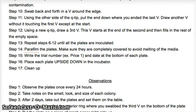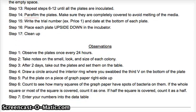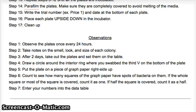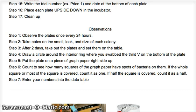Swirl the Q-tip vigorously for 10 seconds to get plenty of yogurt on it. Pass the tube to your second person to screw the lid on, and have the third person partially open the plate lid — never completely remove the lid to avoid contamination. Swab back and forth in a V around the edge in one quadrant. Using the other side of the Q-tip, put it down where you ended the last V and draw another V without touching the first. Using a new Q-tip, draw a third V starting at the end of the second. Repeat until all plates are fully inoculated, then parafilm the plates. Write the trial number and end date at the bottom of each plate, then place each plate upside down in the incubator.